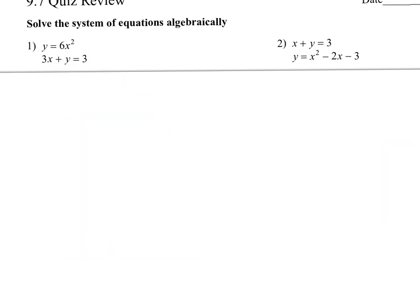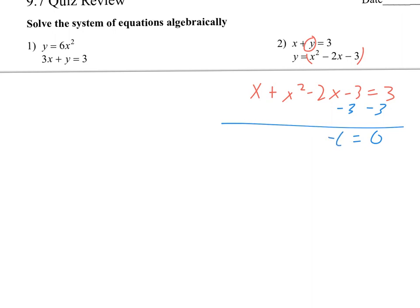Alright, number 2 here. I would first take this and substitute it right there. So this is going to be x plus x squared minus 2x minus 3 equals 3. I would then combine like terms and also subtract this 3 over — that turns it into 0, this will be negative 6, and then combining the x terms gives me a negative 1x, and then x squared goes out there. Then we're going to factor, and I'll let you guys solve it from there. Make sure you find your x's and your y values.